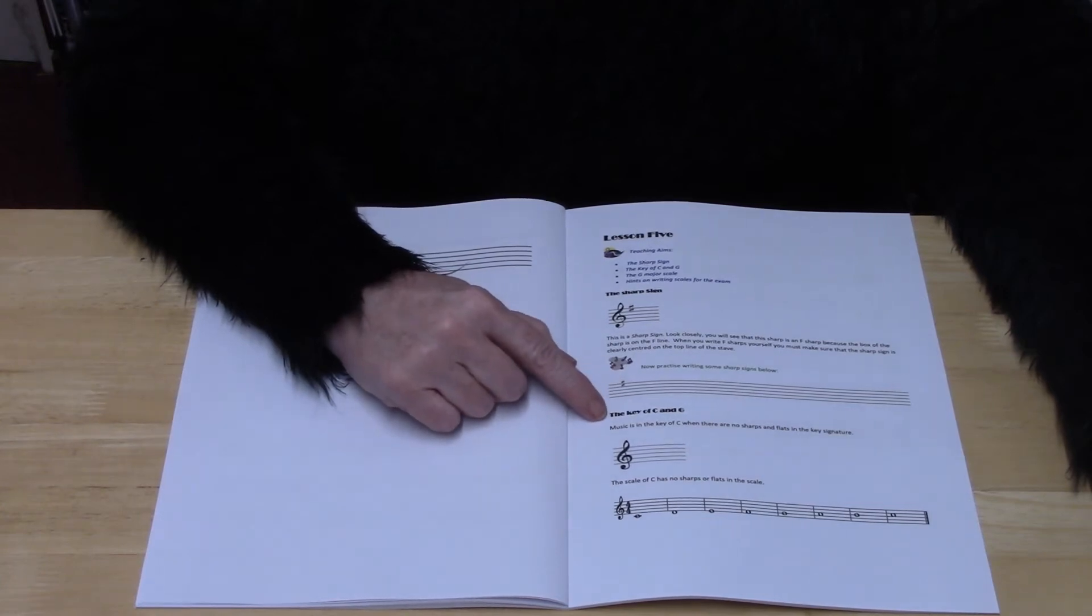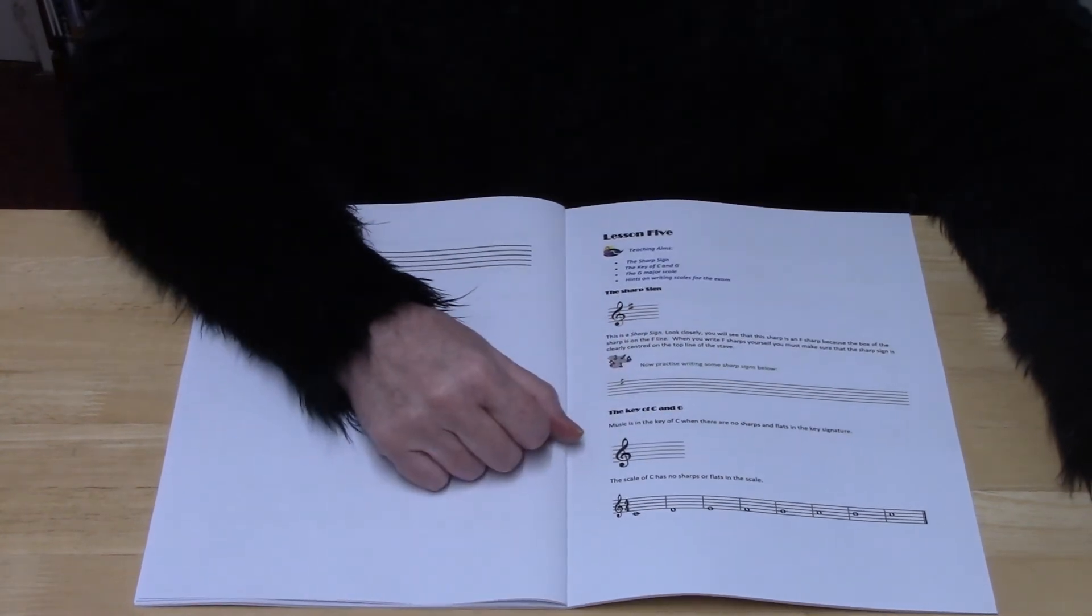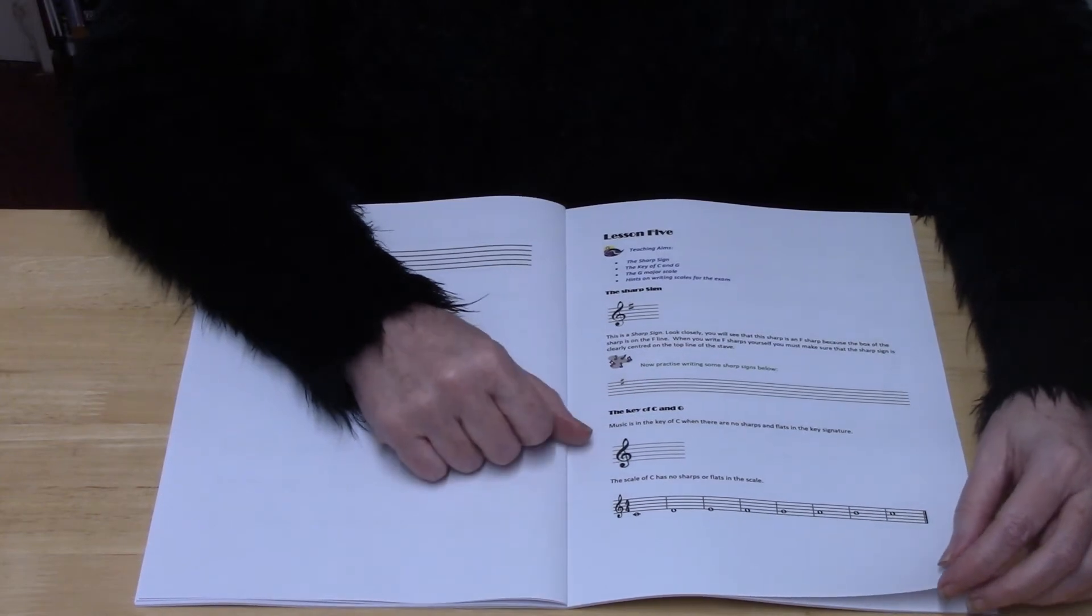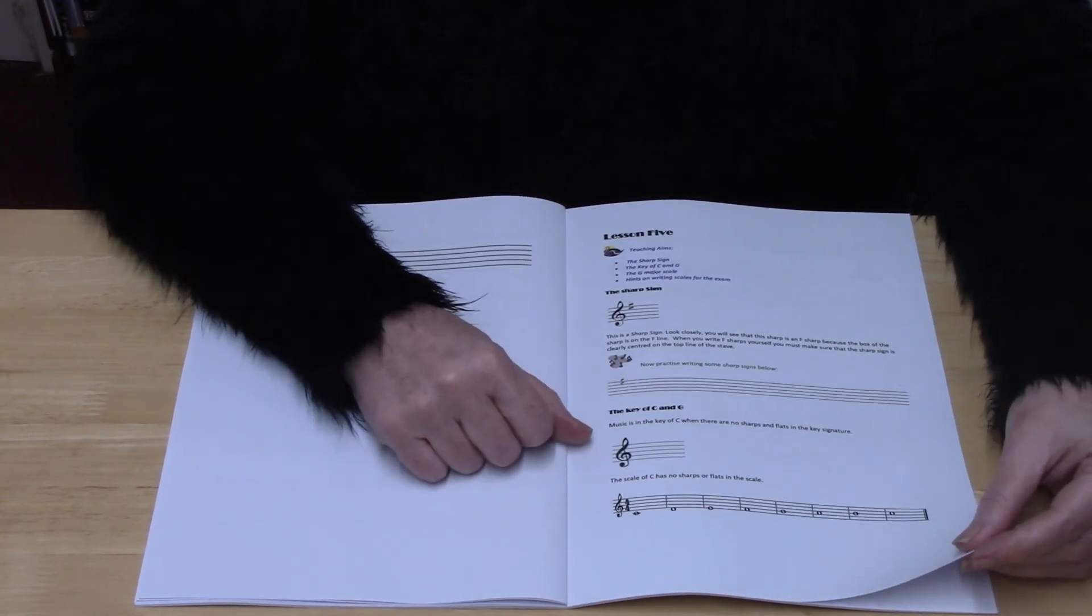So the key of C major has no sharps and flats in, and so the scale of C major has no sharps or flats in.